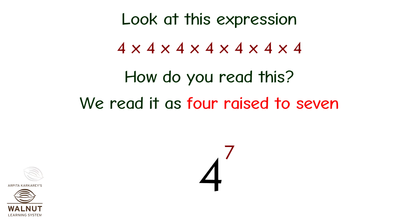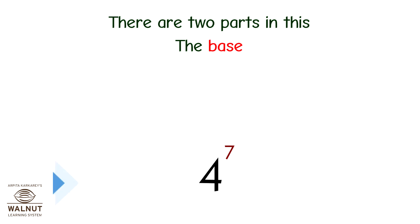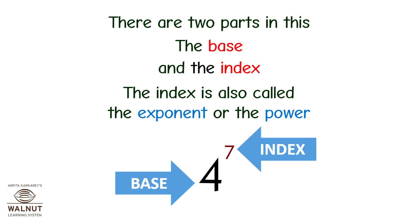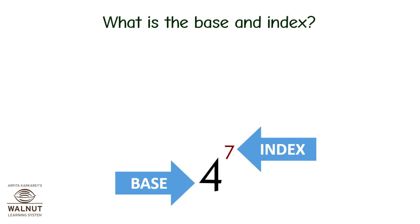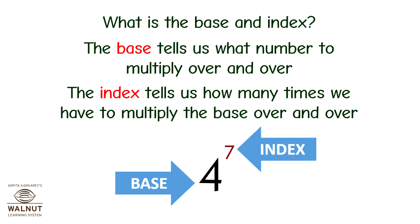How do you read this? We read it as '4 raised to 7' or '4 to the power 7.' There are two parts in this: the base and the index. The index is also called the exponent or the power. The base tells us what number to multiply over and over. The index tells us how many times we have to multiply the base over and over.